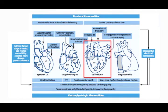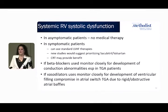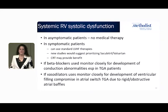Now talking about patients born with a systemic RV — most commonly your d-transposition patients who had the atrial switch (Mustard or Senning procedures), where the RV is now pumping to the body. The other case is L-transposition or congenitally corrected transposition, where patients were born with their ventricles switched and their RV has always been pumping blood to their body. In asymptomatic patients, even if their RV-EF is low, we really don't have a role for medical therapy, as there's not enough data to show benefit in the absence of heart failure symptoms.